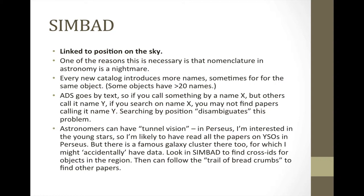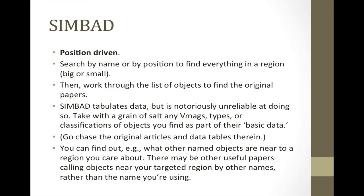It's also true that astronomers tend to have tunnel vision. In the constellation Perseus there's a big molecular cloud called the Perseus Molecular Cloud, and I'm interested in the young stars there. But there's also a famous galaxy cluster in Perseus, and because of surveys I have in Perseus, I might accidentally have data for some of those galaxy cluster sources. So I can look in SIMBAD to find cross-identifications for all objects in the region, follow the trail of breadcrumbs, and identify other papers about non-YSOs that might be in my survey. SIMBAD is position-driven: search by name or position to find everything in a region, big or small, and then work through the list of objects to find the original papers.